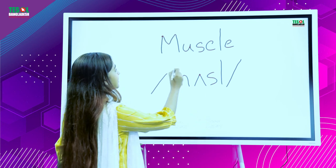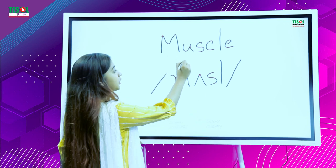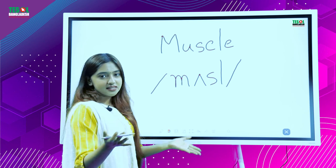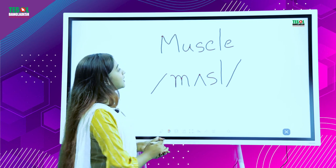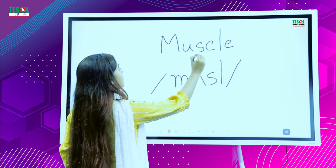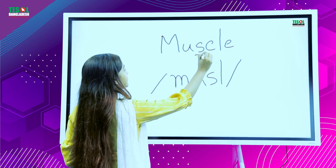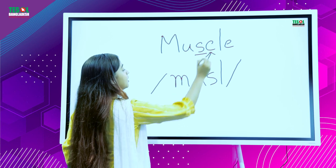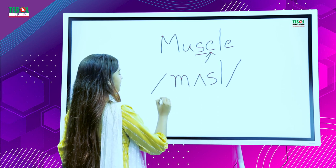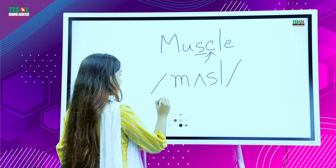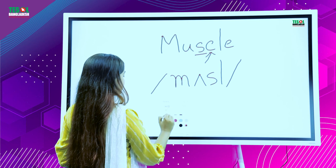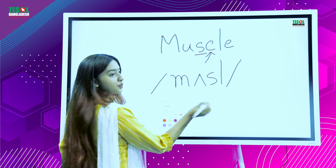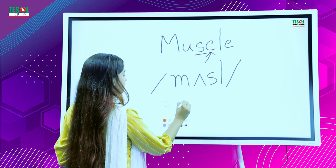Look at this: M-U-S-C-L-E. So what we can see here is that after S, there is a C. But in the pronunciation, if we look at the pronunciation, we can see that the C here is silent.